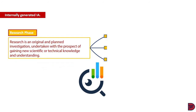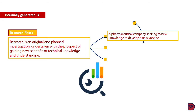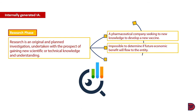Research is the original and planned investigation undertaken with the prospect of gaining new scientific or technical knowledge and understanding. For example, a pharmaceutical company seeking to undertake activities or tests aimed at obtaining new knowledge to develop a new vaccine. The company is researching the unknown and at this stage, no future economic benefit is expected to flow to the entity. Therefore, such costs are to be expensed through the profit or loss account.